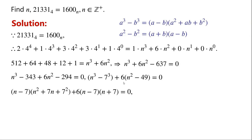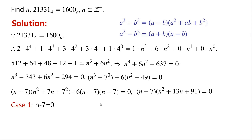By applying the difference of squares, n squared minus 49 can be written as (n minus 7)(n plus 7). So the left hand side of the equation can be written as (n minus 7)(n squared plus 13n plus 91) equals 0. Case 1: n minus 7 equals 0, so n equals 7.